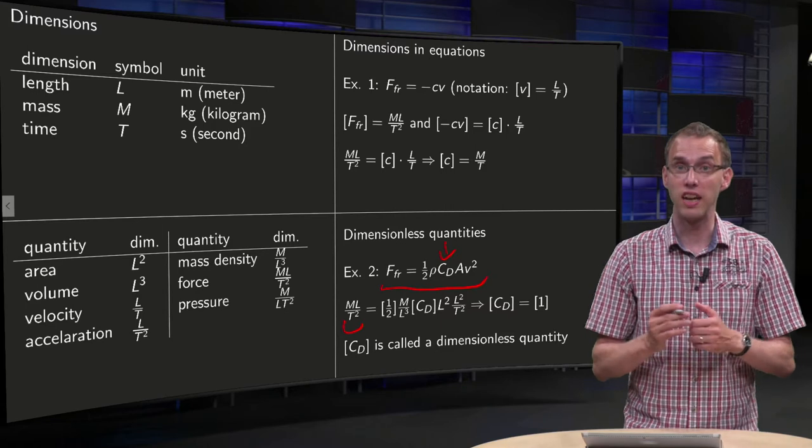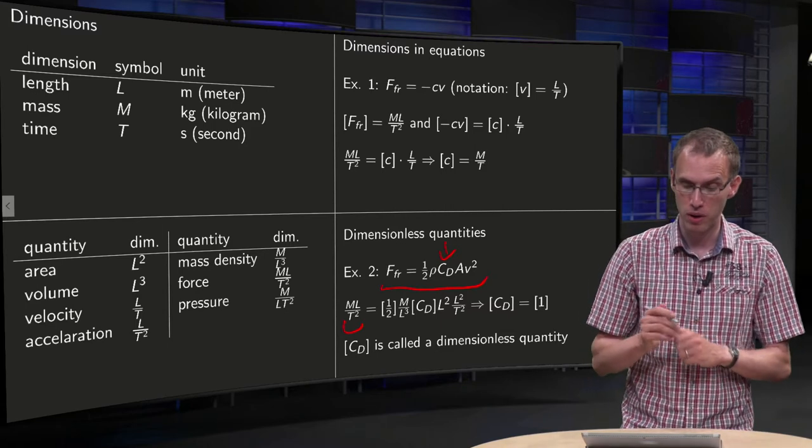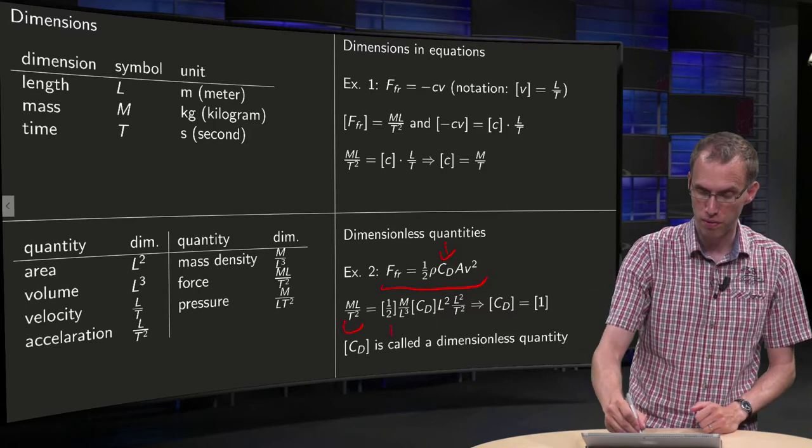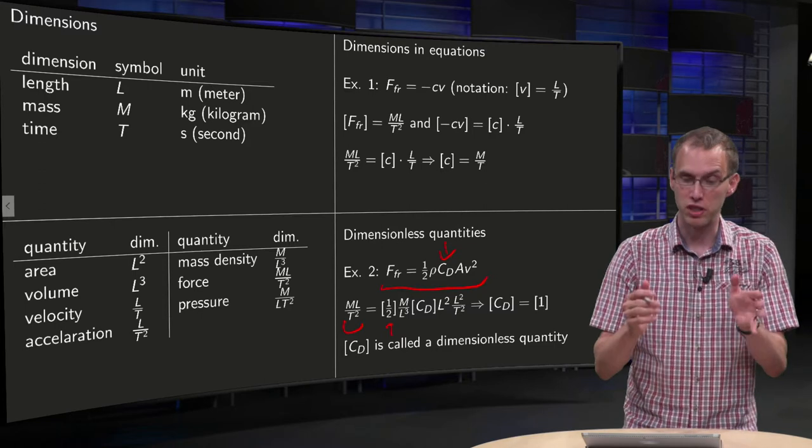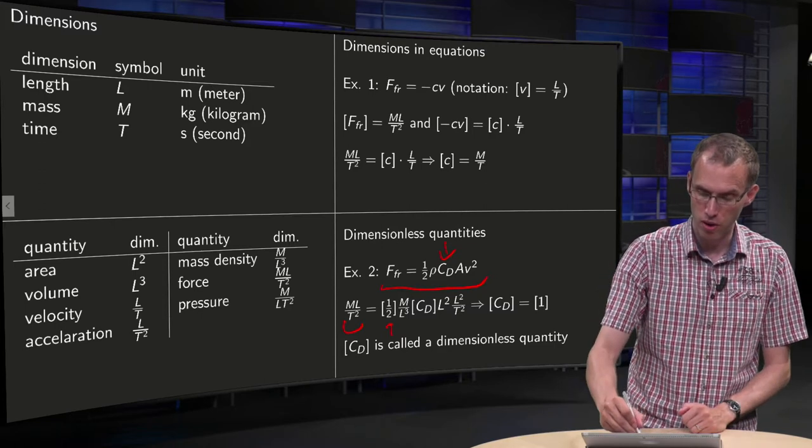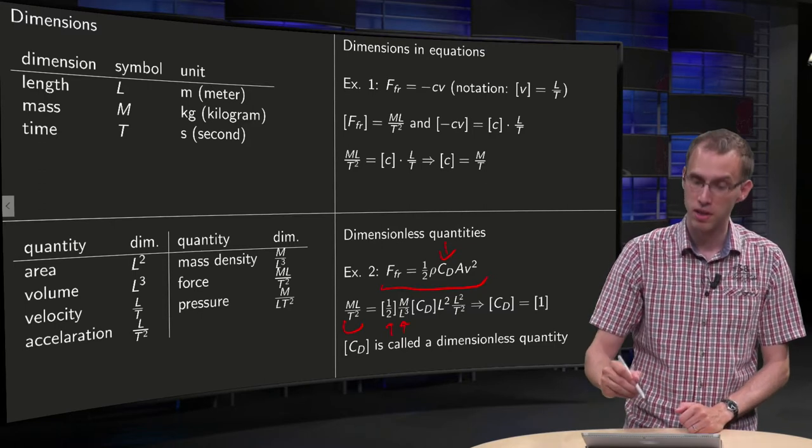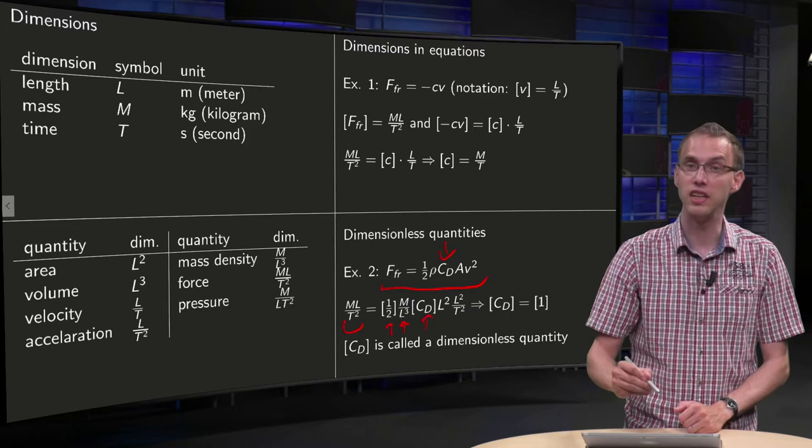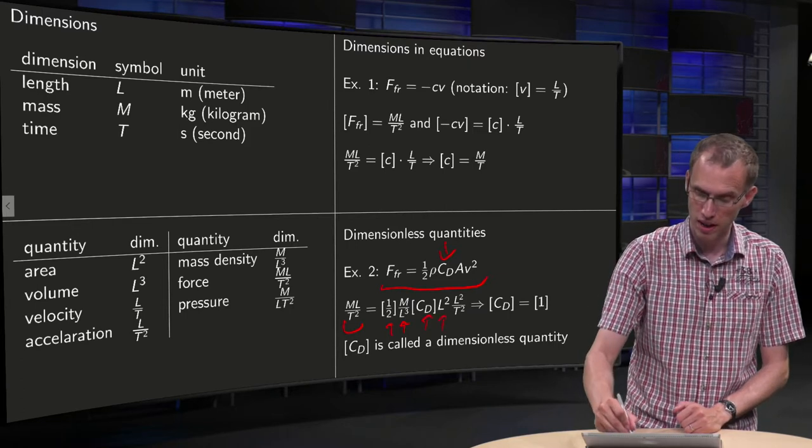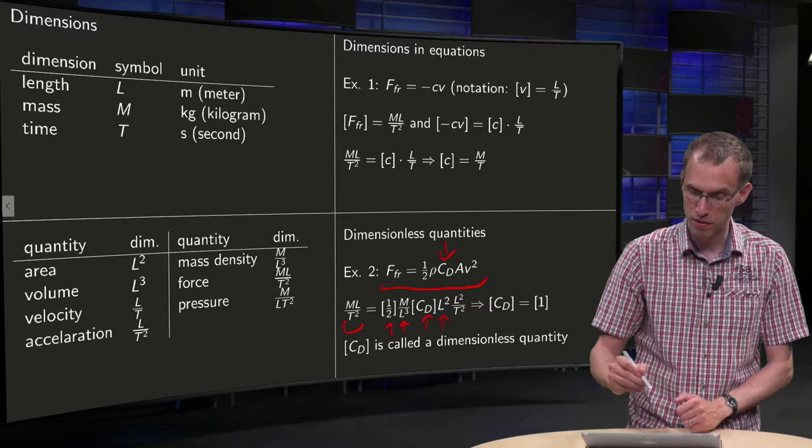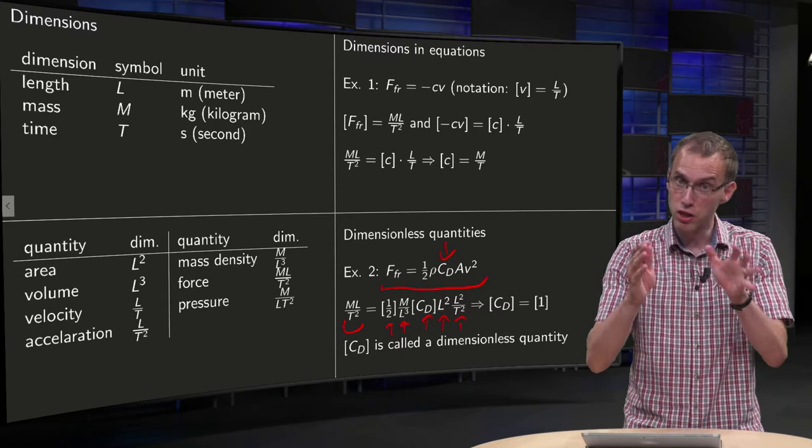Dimension on the left is again force, so ML over T squared. Dimension of one half, which is dimensionless, we get rho, which is M over L cubed, we get the unknown dimension of Cd, we get the dimension of the area, L squared, and we have V squared, so we get L over T squared, so an L squared over T squared.